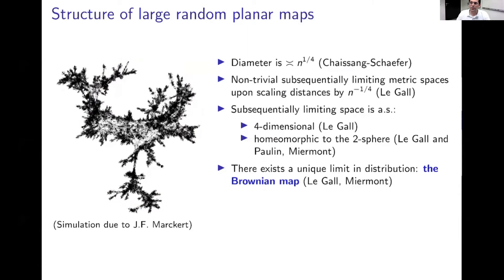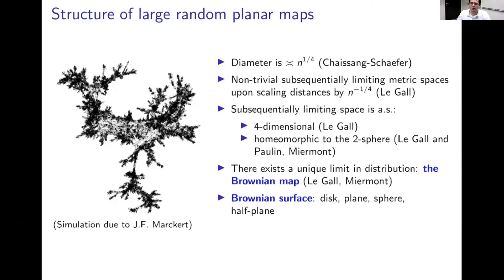There was a really big breakthrough, first announced around 2011 in two independent works — one by Le Gall and another by Miermont — where they proved that you don't have to take a sub-sequential limit: you really do have a true limit of these probability measures, and you get something called the Brownian map. The Brownian map is a probability measure on the space of metric spaces; it's called the Brownian map because it's a limit of planar maps and has a very explicit construction using Brownian motion. This is part of a family of results — you can consider scaling limits of random surfaces with other topologies, such as quadrangulations of the disc, the plane, the sphere, the half-plane, and so on. These converge and form the family of Brownian surfaces. One thing to emphasize is that these surfaces are not embedded surfaces — the limiting object in the Gromov-Hausdorff topology is just a metric space, or more precisely a metric measure space.